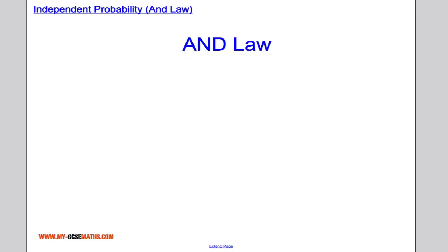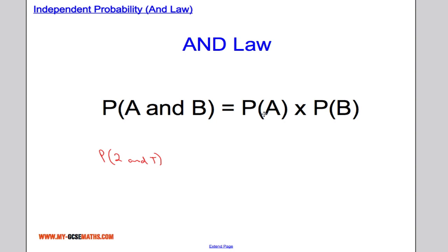Suppose we want to get a 2 with the die and tails with the coin. We need to use the AND law, which states that the probability of A and B happening is the probability that A happens multiplied by the probability that B happens. So the probability of getting a 2 and tails is 1 out of 6 multiplied by 1 out of 2, which equals 1 out of 12. Only 1 in 12 times will we get 2 and tails.